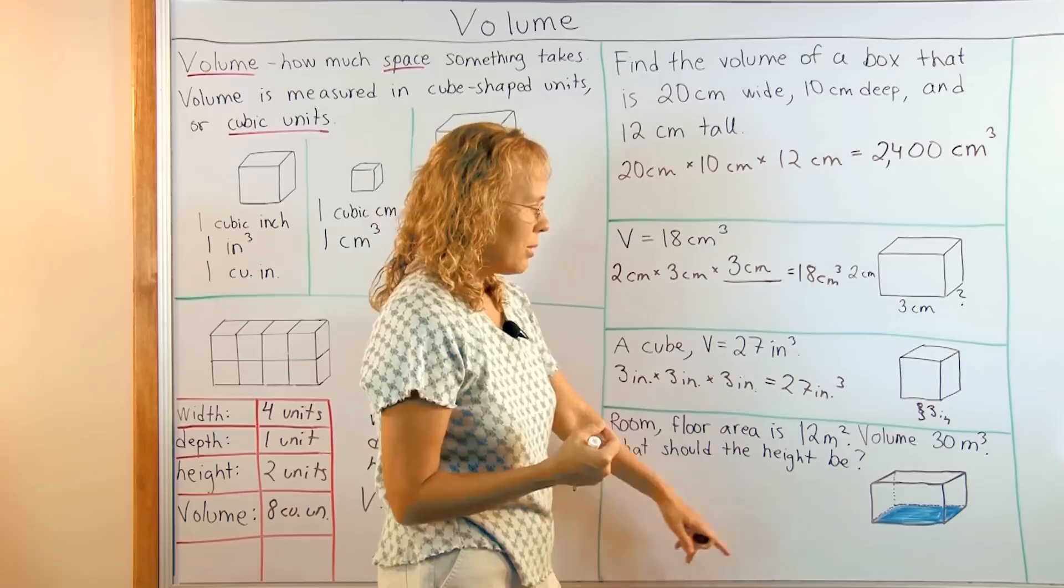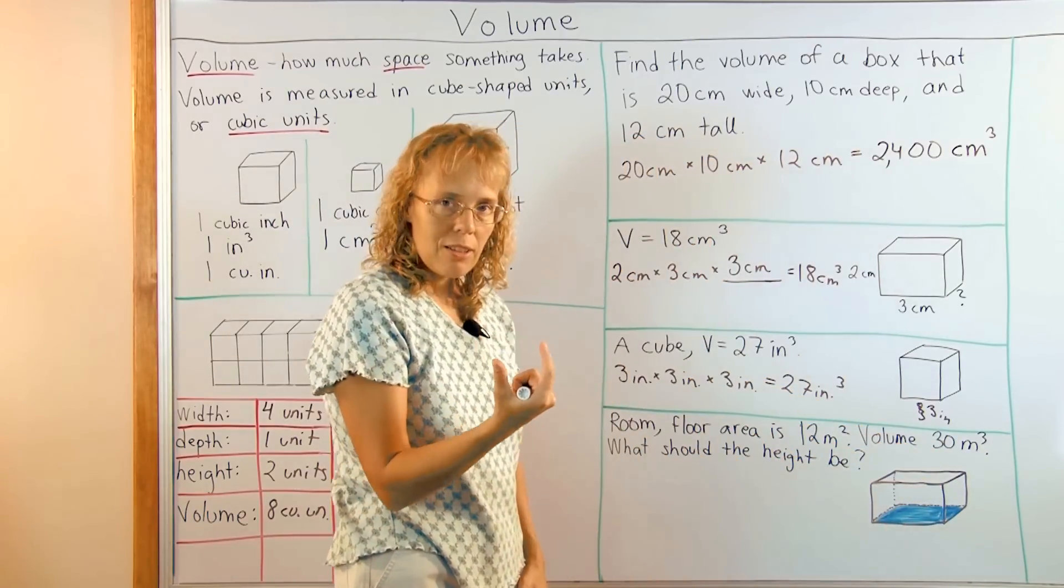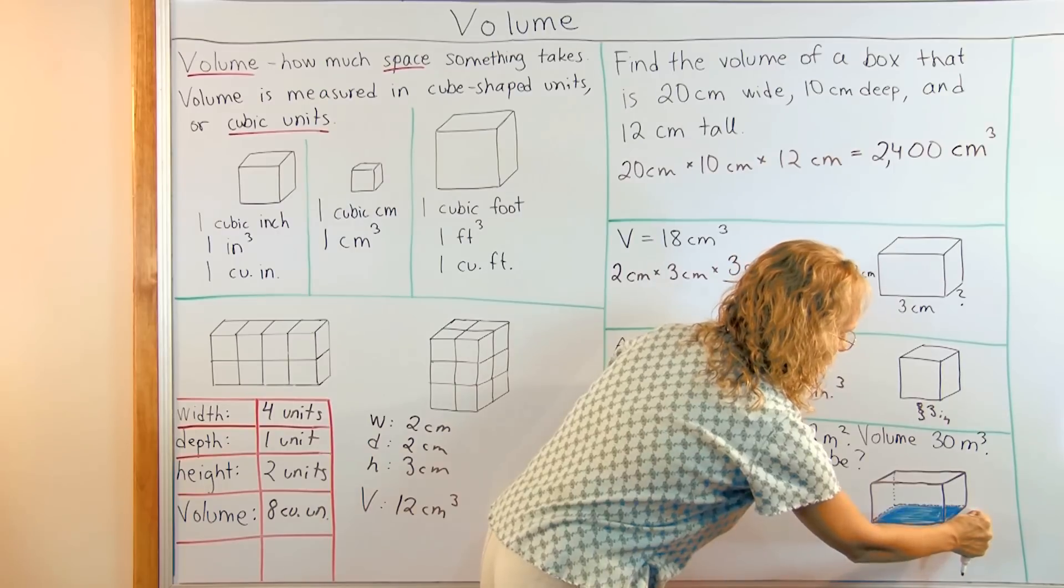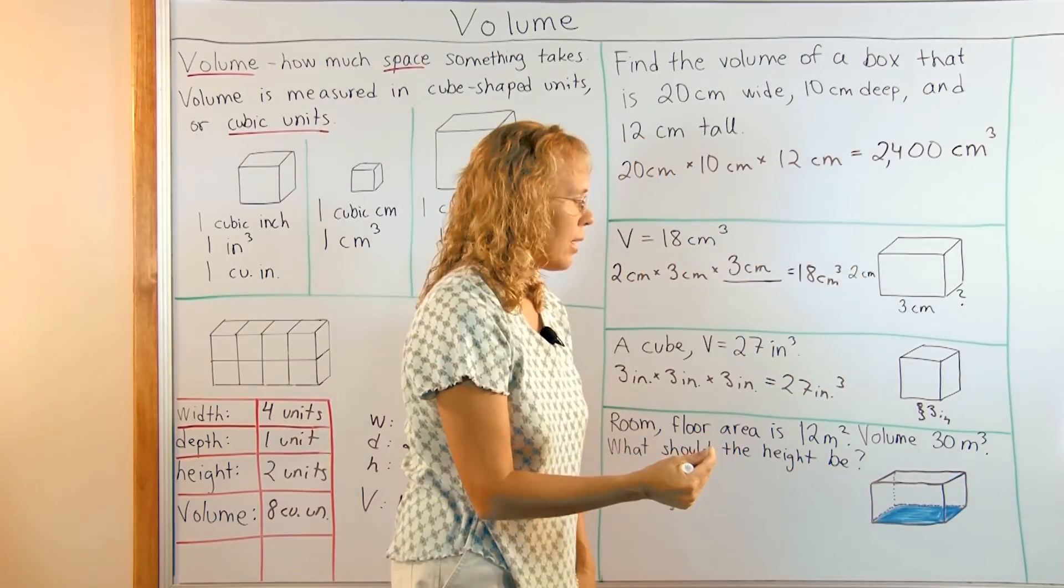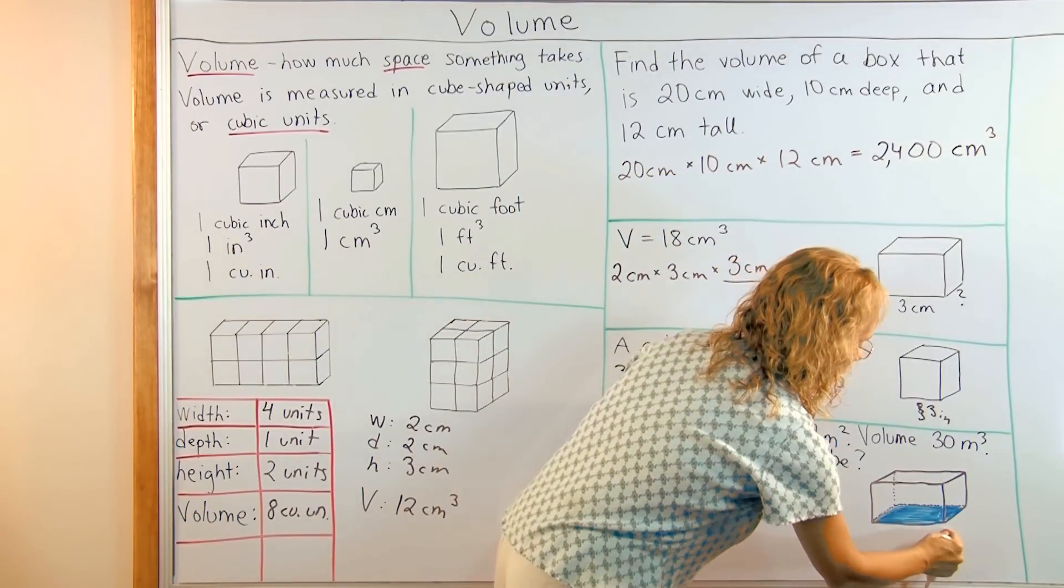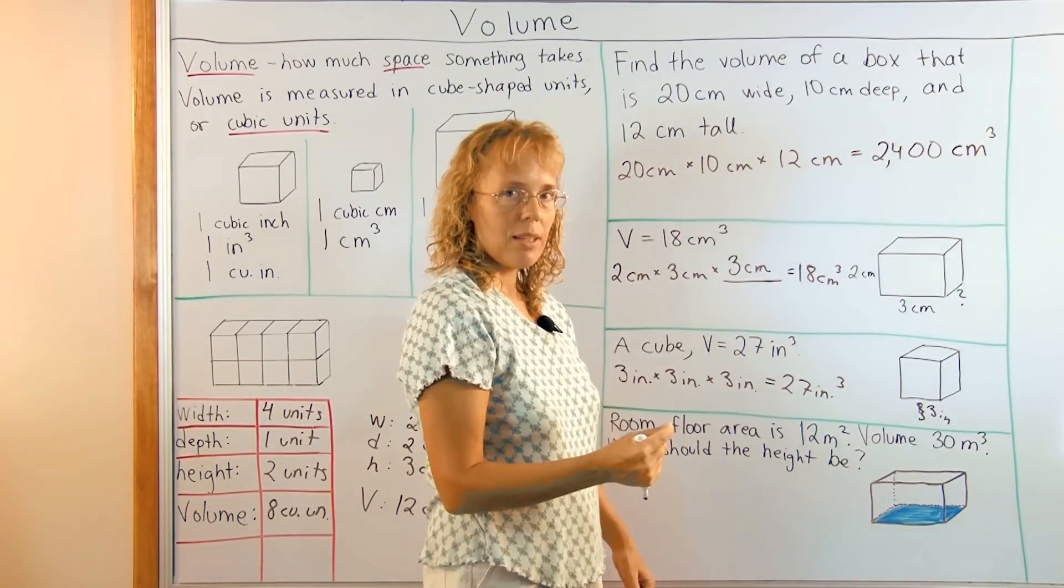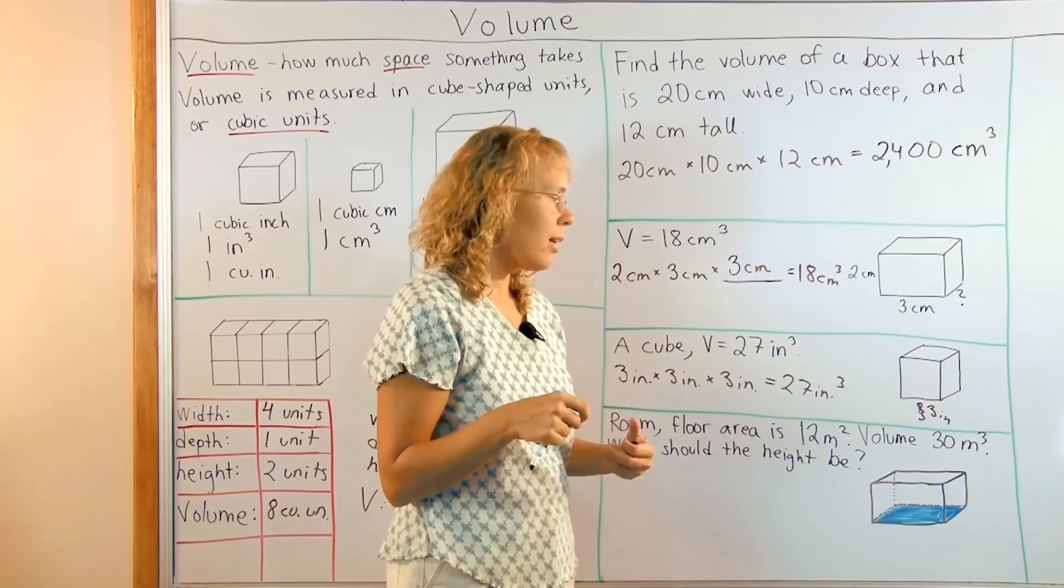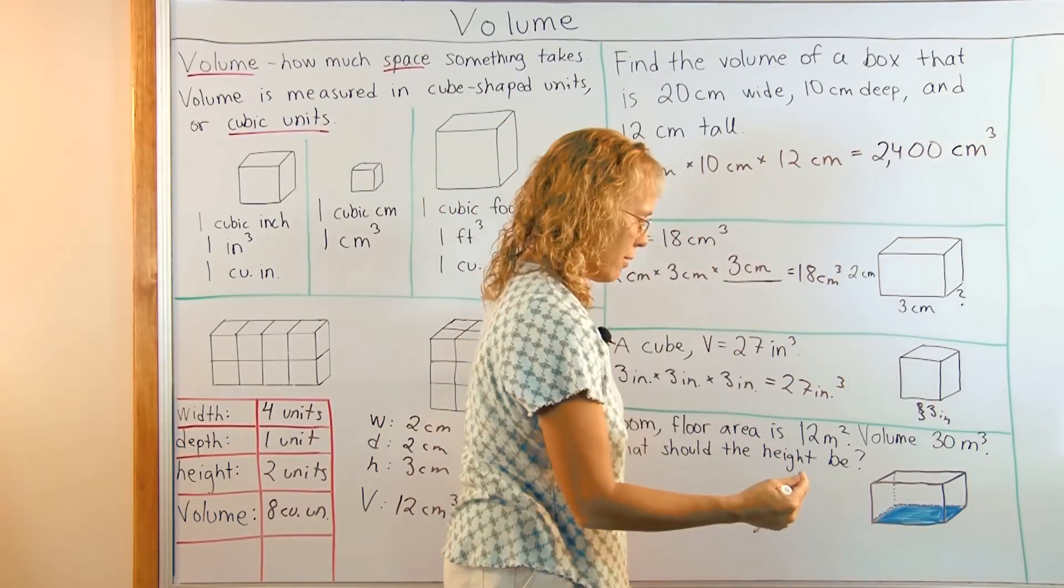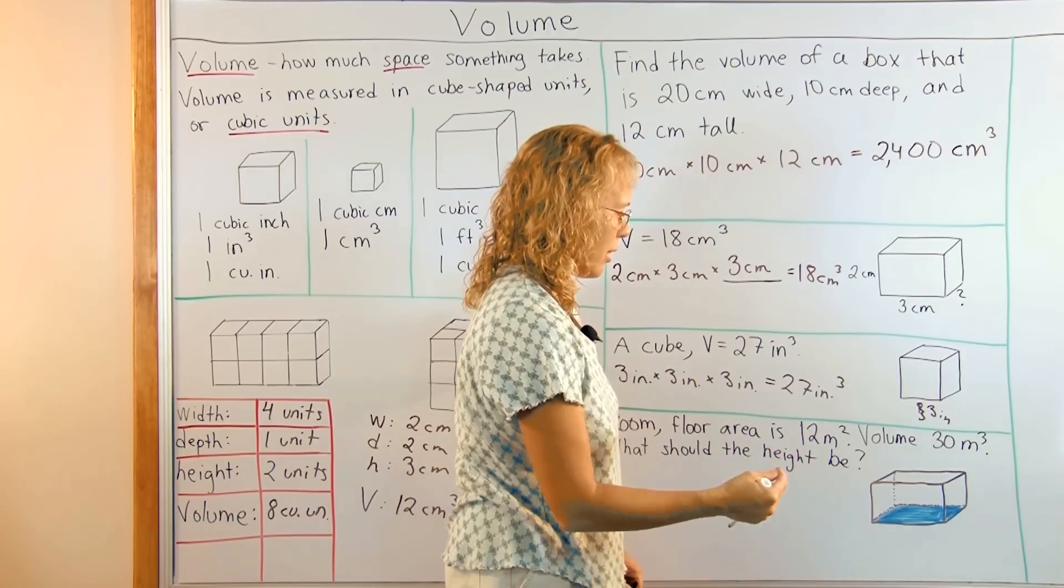To find the volume, I mean, we are given the volume, but to calculate the volume, we would multiply this times this times this, right? And to calculate area, you would multiply this times this. And the area is given. We know the floor area is twelve square meters. So this times this is twelve. We already know that. So therefore, the question is basically, twelve times that. That is thirty.